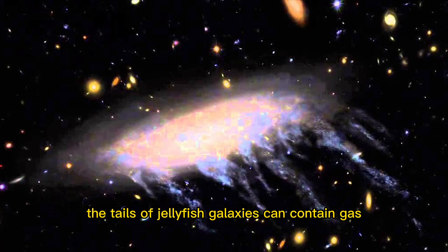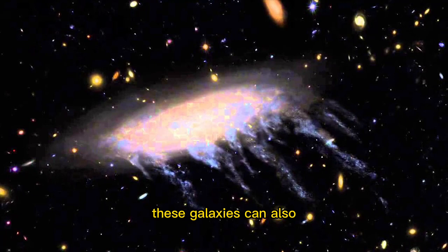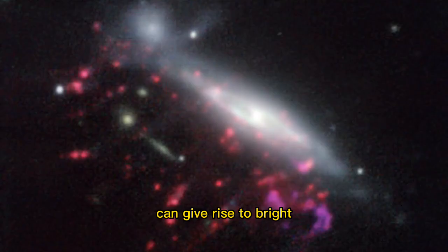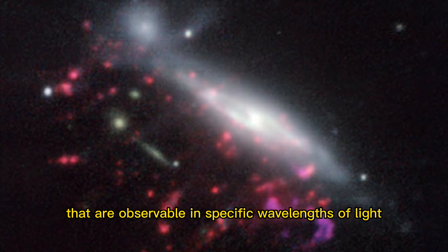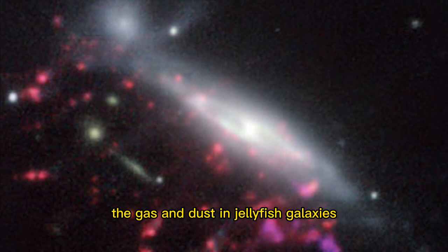The tails of jellyfish galaxies can contain gas and dust that is enriched with heavy elements like oxygen and carbon. These galaxies can also generate significant amounts of ionizing radiation. The ionized gas in jellyfish galaxies can give rise to bright, glowing regions of gas that are observable in specific wavelengths of light and emit x-rays and radio waves.